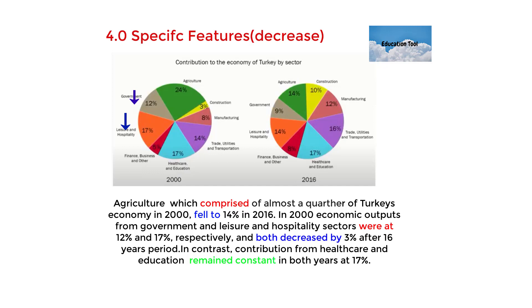For specific feature — decrease — the sectors that experienced a decrease in percentage are agriculture, government, leisure, and hospitality. My last paragraph reads: 'Agriculture comprised almost a quarter of Turkey's economy in 2000 and fell to 14 percent in 2016. In 2000, economic output from the government and leisure and hospitality sectors were at 12 percent and 17 percent respectively, and both decreased by 3 percent after a 16-year period. In contrast, contribution from healthcare and education remained constant in both years at 17 percent.'